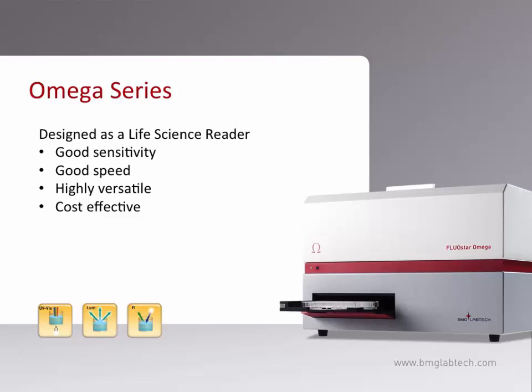Today we will be talking about the Omega series of microplate readers. This series is the most cost effective among our multi-mode microplate readers and can be equipped to perform absorbance, luminescence, or fluorescence intensity assays, or any combination of these detection capabilities. For the assay we will be talking about today, our focus will be on fluorescence intensity assays. The Omega readers exhibit good sensitivity at an LOD of 200 atomol per well for fluorescence, and can read a 384-well plate in as little as 16 seconds.